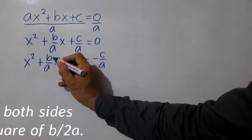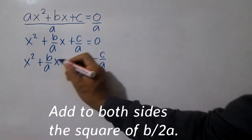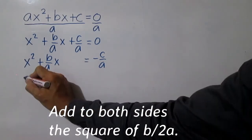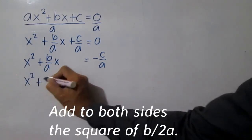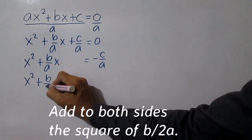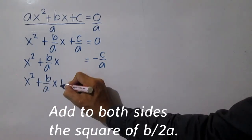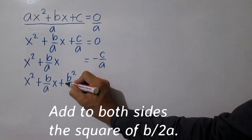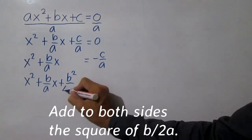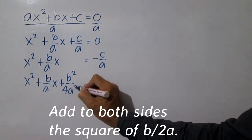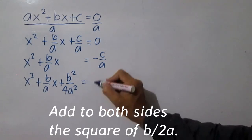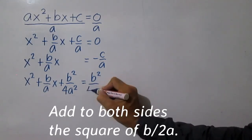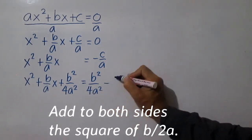Add to both sides the square of b over 2a. This gives: x squared plus b over a times x plus b squared over 4a squared equals b squared over 4a squared minus c.